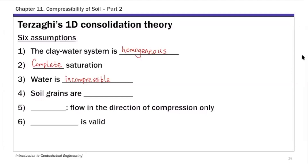The fourth assumption is that soil grains are also incompressible. An important note here: soil grains and soil skeleton are two different concepts. Grains basically make up the soil skeleton. So here we assume soil grains are incompressible, but the skeleton itself can still deform. These two are different.